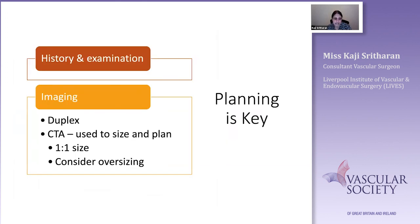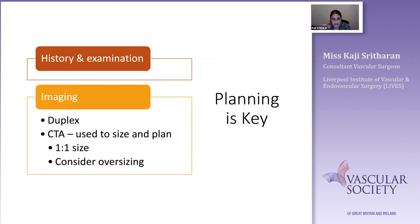Planning is the key to ILIAC interventions. In terms of imaging, I always do a dual image — a duplex scan as well as a CT scan — using the CT to size and plan both ballooning and stenting. For both common and external ILIAC stenotic and occlusive disease, I tend to do one-to-one sizing. The caution is being aware of very small ILIAC vessels, common in short female patients. Small stents perform badly in the ILIAC segment, so you may need to consider a surgical option or oversizing.